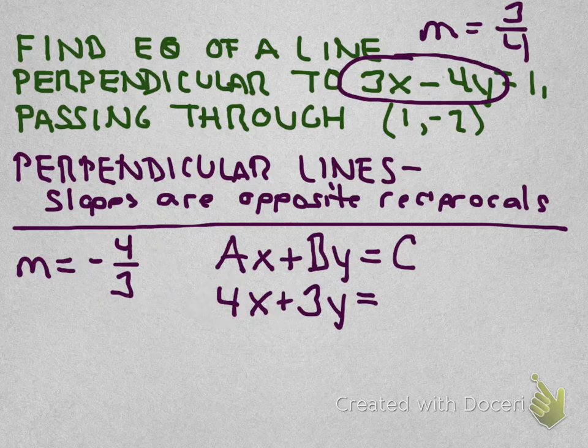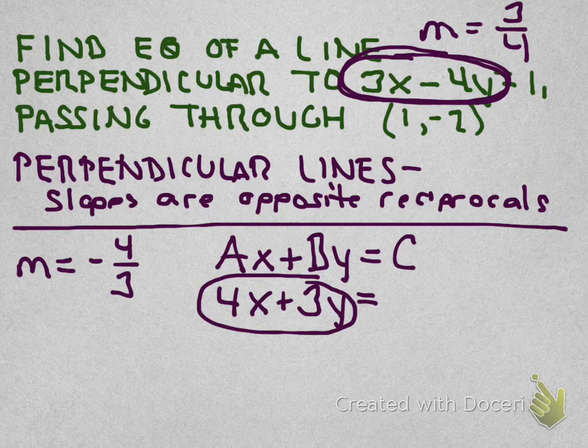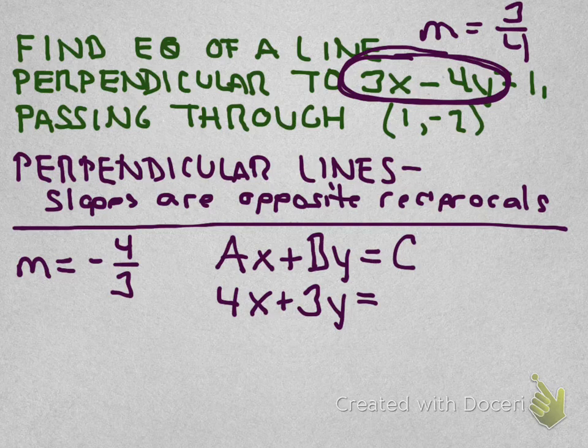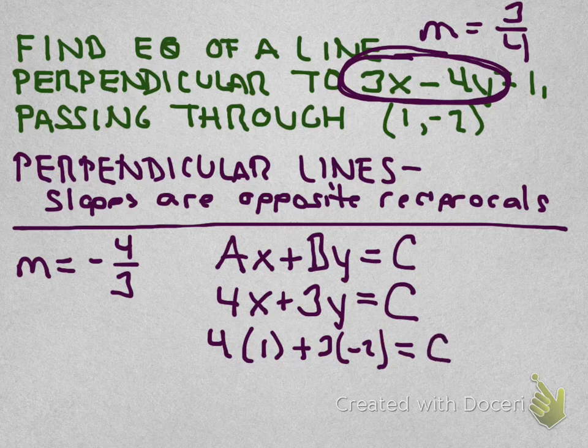And notice how that relates to the original equation here. We had 3x - 4y before. Now we have 4x + 3y. You really just switch the A and the B and we switch the sign. Switching the position of the A and the B takes care of the reciprocal part. And switching the sign takes care of the opposite part. So if we understand how standard form works, this is actually a little bit easier than converting into slope intercept form. It equals C. We do have to find C. So we'll do 4 times 1 plus 3 times negative 2. That will be C.